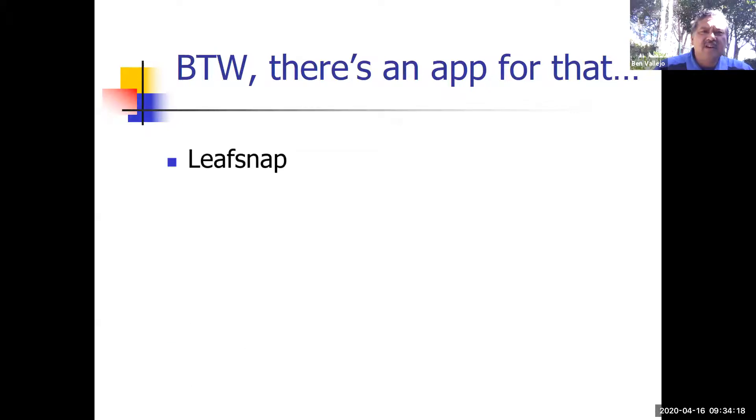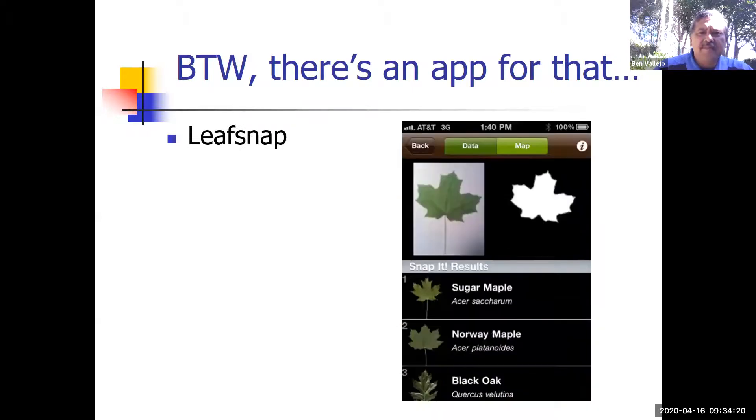There's an app called Leaf Snap, which was made by a team at Cornell University in upstate New York. They used the photo recognition characteristics of your phones to classify plants.